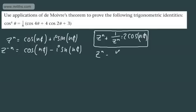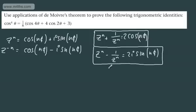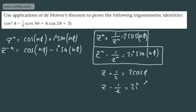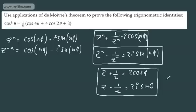If we now subtract them — z^n minus 1/z^n — cos(nθ) minus cos(nθ) is 0, and i·sin(nθ) minus (−i·sin(nθ)) gives a plus, so we end up with 2i·sin(nθ). That's yet another important result. And of course, as special cases when n = 1: z + 1/z = 2cos(θ), and z − 1/z = 2i·sin(θ).